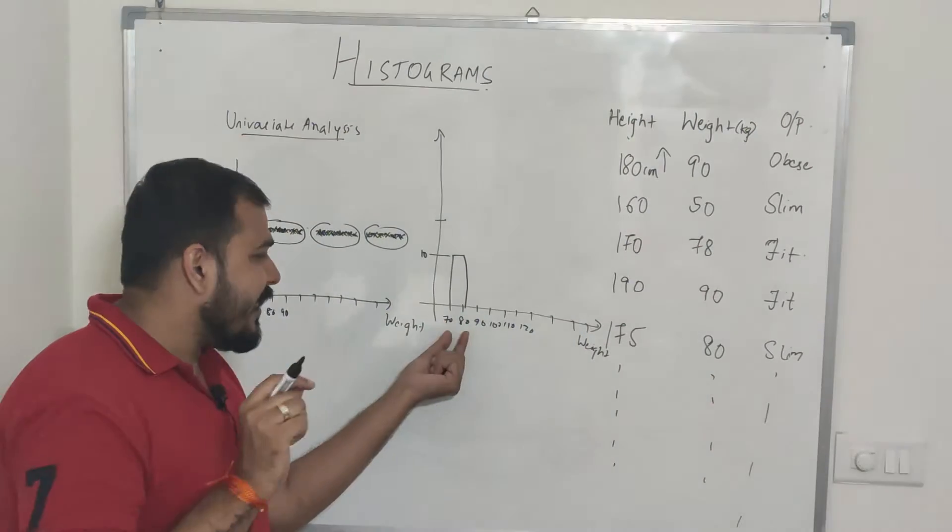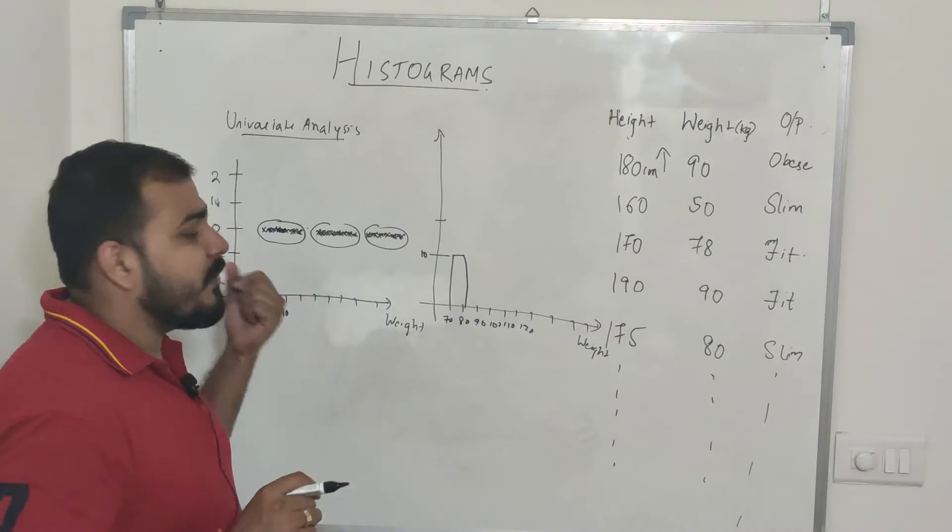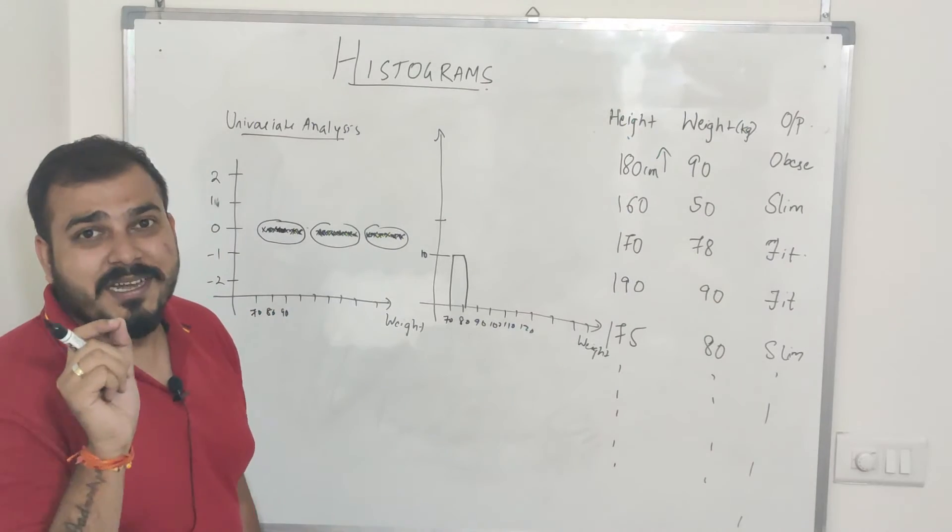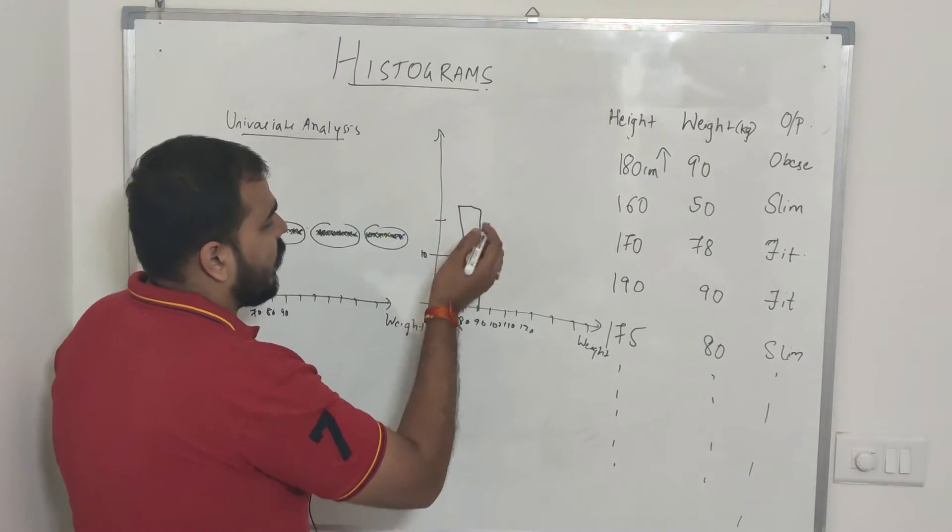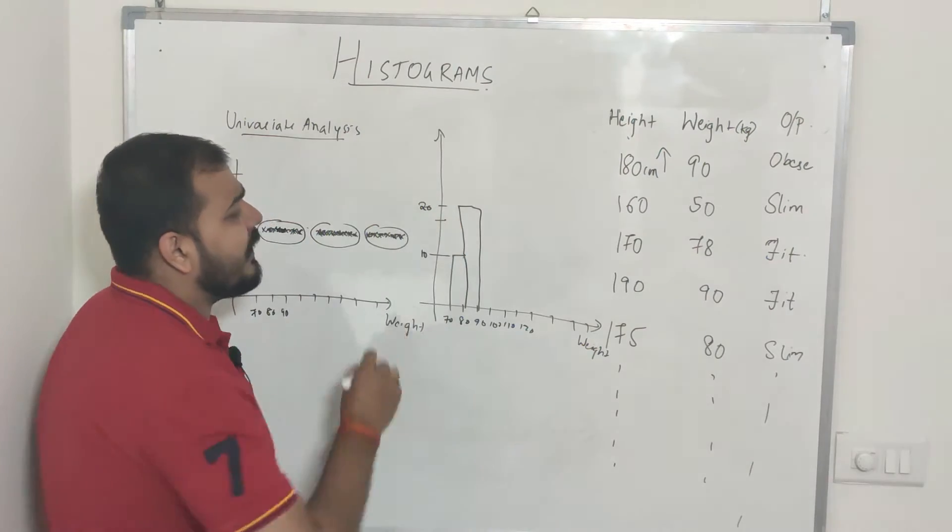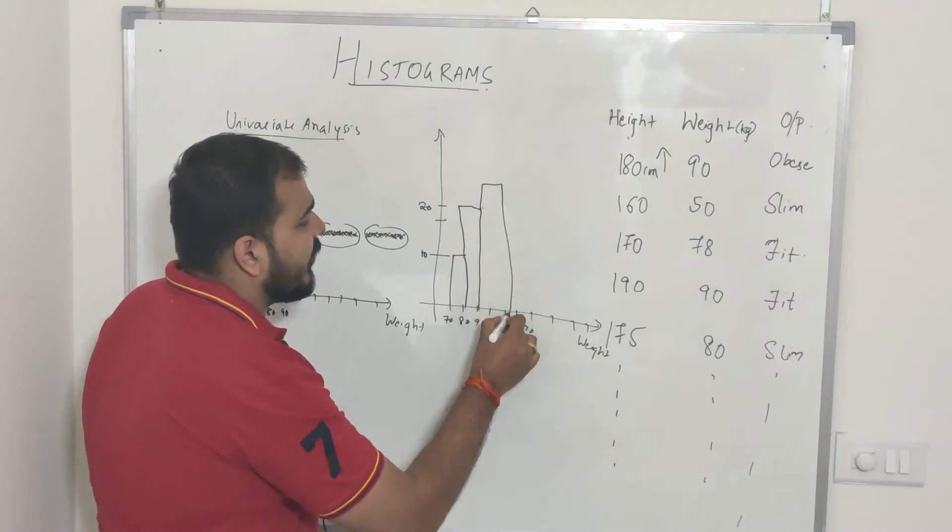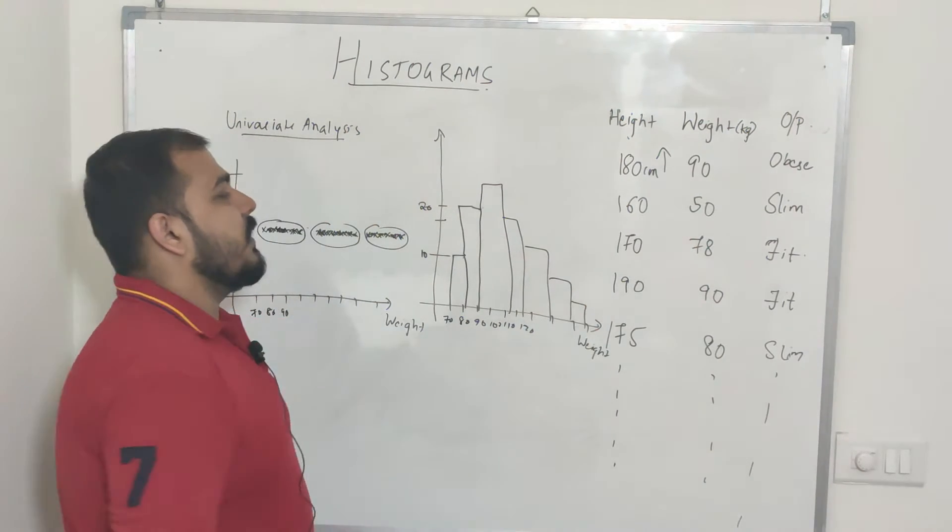This value will basically be 10. This is indicating that within the bin range between 70 to 80, 10 values are basically present. Similarly between 80 to 90 I see more dense points are there, so I can think that this may be 20. This is showing us what is the count. Like this all the graphs will be created.